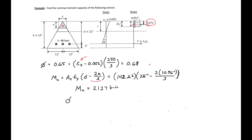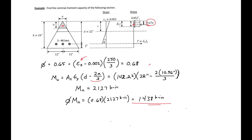We take Mn times our phi to find phi-Mn equal to 0.68 times 2,127 kip-inches, which gives us a factored nominal moment capacity of 1,438 kip-inches. This is our final answer, and this is how you find the nominal moment capacity of a triangular section.